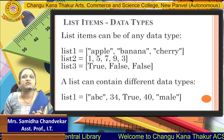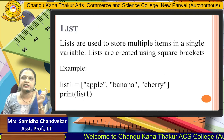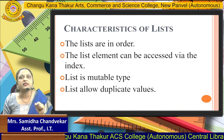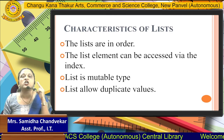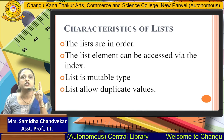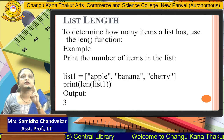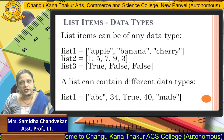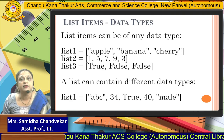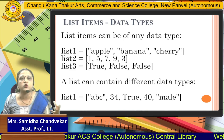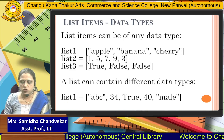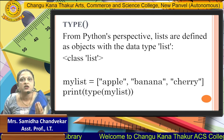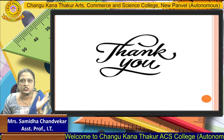So what have we seen in this video? In this video, we learned about what exactly a list is, how it is declared, and what are the characteristics: ordered, access via index, mutable type, allows duplicate values, and length. We also covered what kind of data types are supported by the list — a list supports any data types and can contain different data types combined. Then we saw the type, which tells us what kind of list it is — it belongs to class list. Thank you.